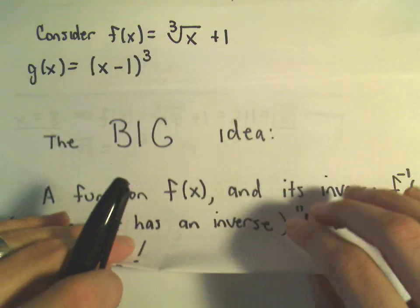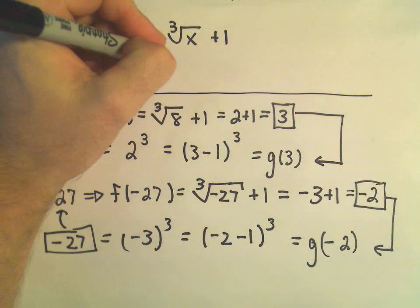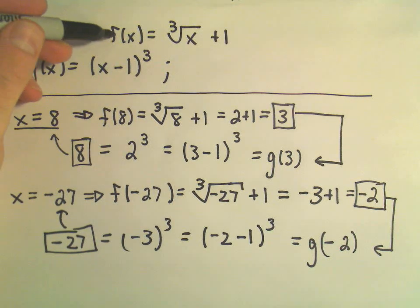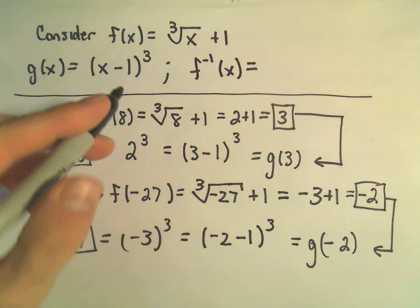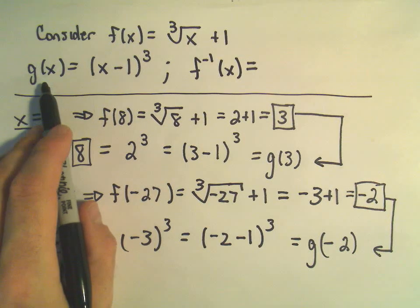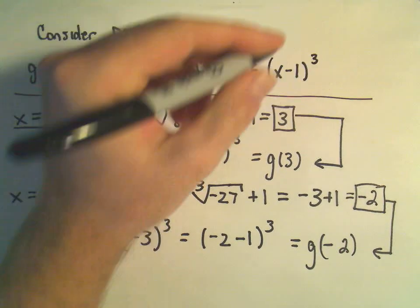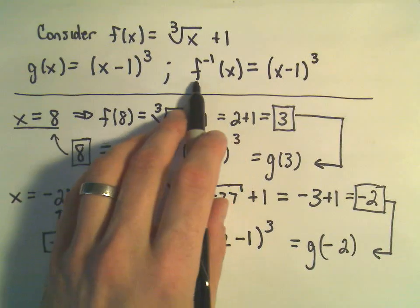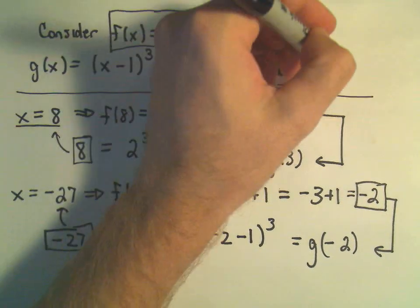We have inverse operations in mathematics. Addition and subtraction are inverse operations. Multiplication and division are inverse operations — they somehow kind of undo each other. Notation-wise, we use this new little f to the negative one of x. So in this case, since f of x and g of x are inverses, instead of labeling this function g of x, I could simply write x minus one cubed equals f inverse of x. Again, we read this as f inverse of x.